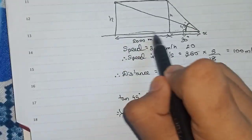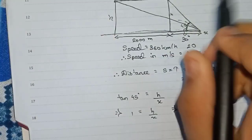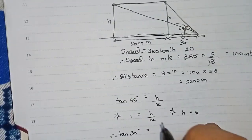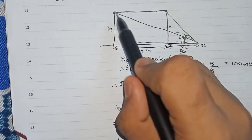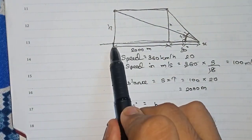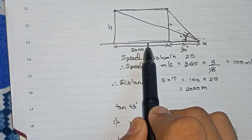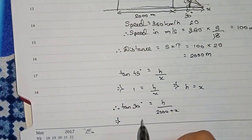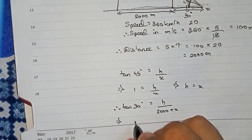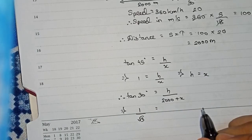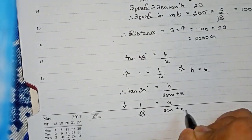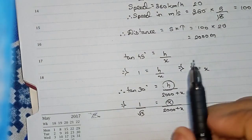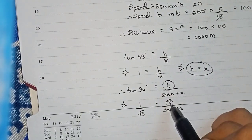Now we take the larger triangle with the 30-degree angle. Here, tan 30 = height/base. Our height is h and the base is the full horizontal distance, which is 2000 + x. So tan 30 = h/(2000 + x). Since h = x, we substitute x in place of h, giving us: 1/√3 = x/(2000 + x).